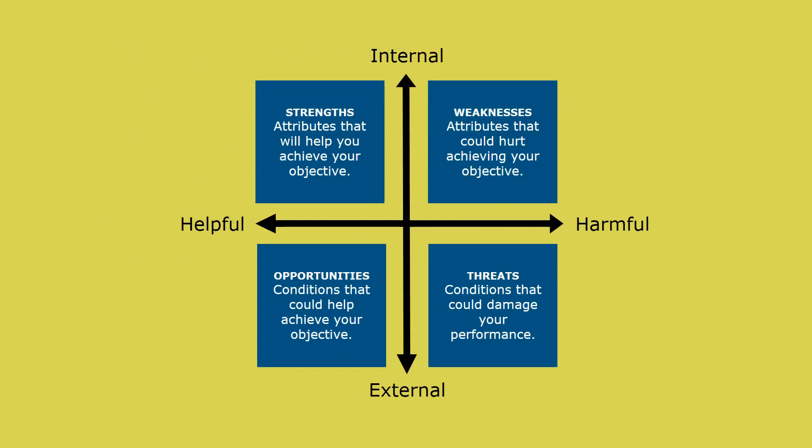Use a SWOT matrix — a square divided into four quadrants — to complete your SWOT analysis. Each quadrant represents one element: strengths, weaknesses, opportunities, and threats. Let's take a look.